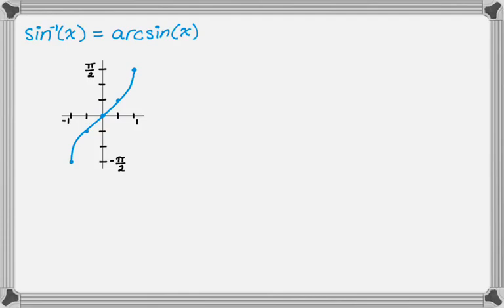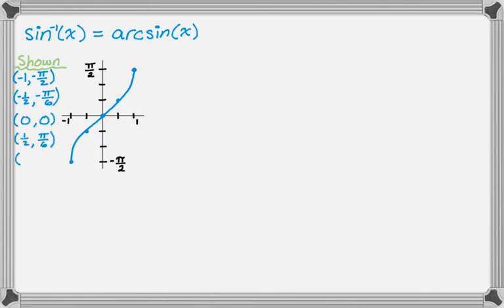The five key points are where the x-coordinate is a rational number: negative 1 comma negative pi over 2, negative 1 half comma negative pi over 6, 0 comma 0, 1 half comma pi over 6, and 1 comma pi over 2. There are obviously infinitely many points, and there are other important values you need to know for arc sine, but we're not going to highlight those on the graph.